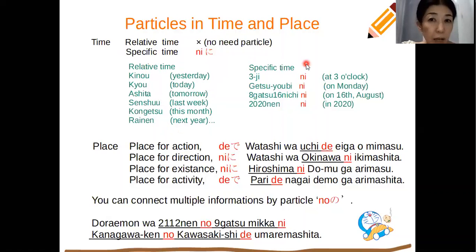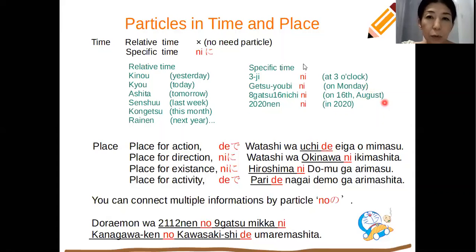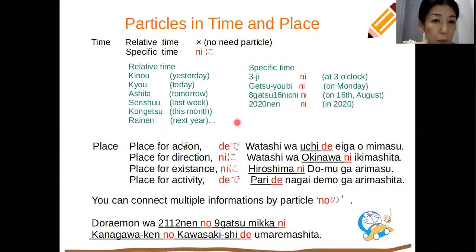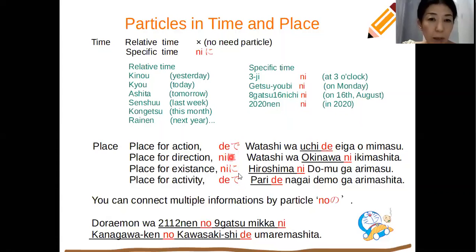Specific time is exactly at three o'clock, or on Monday, or with a number. So in Japanese: 3時に, 月曜日に, 8月16日に, 2020年に — you can put に after specific time expressions. For place, there are also two choices.